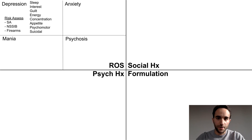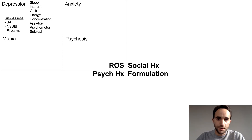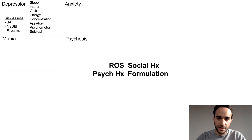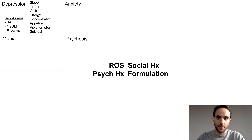Starting with depression, you can use the mnemonic SIGGICAPS to ask about the symptoms of a major depressive episode. This is also a good time to ask about suicide risk factors, including prior suicide attempts, prior non-suicidal self-injurious behavior, and access to firearms.